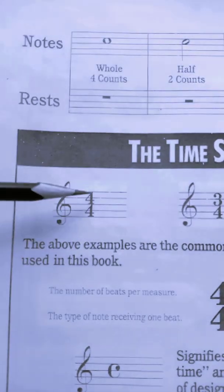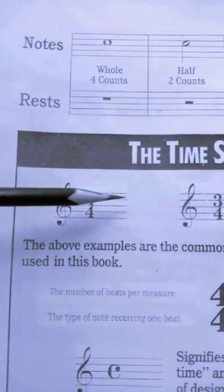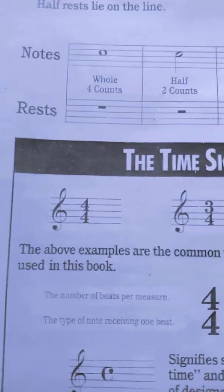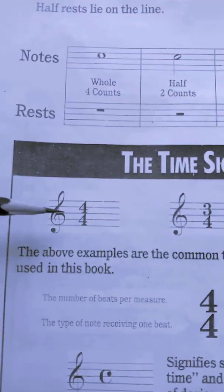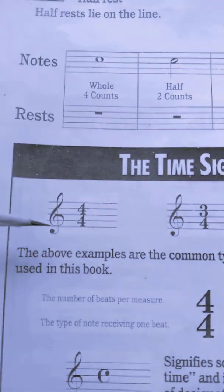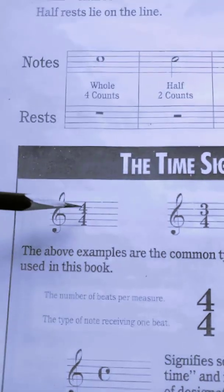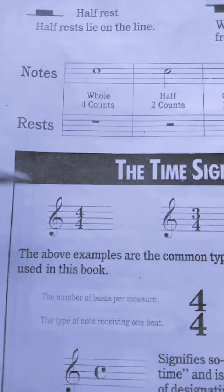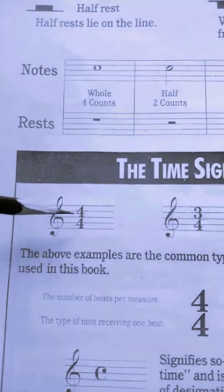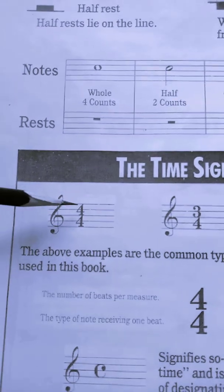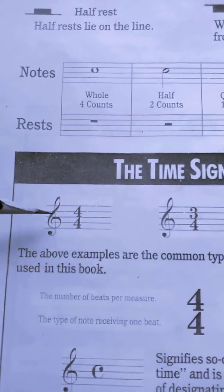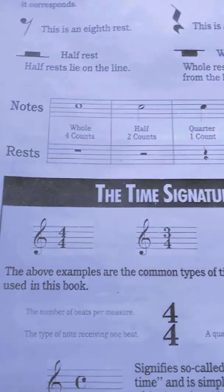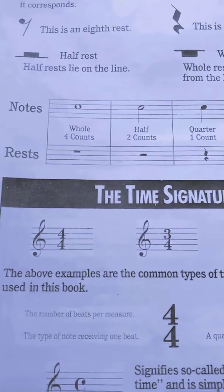This is what a four four looks like. We have the lines of the stave or the lines of the staff, the treble clef which we learned in the last video, and it has a fraction. You will always see a fraction in front of the treble clef which determines how many beats will lie in one bar.